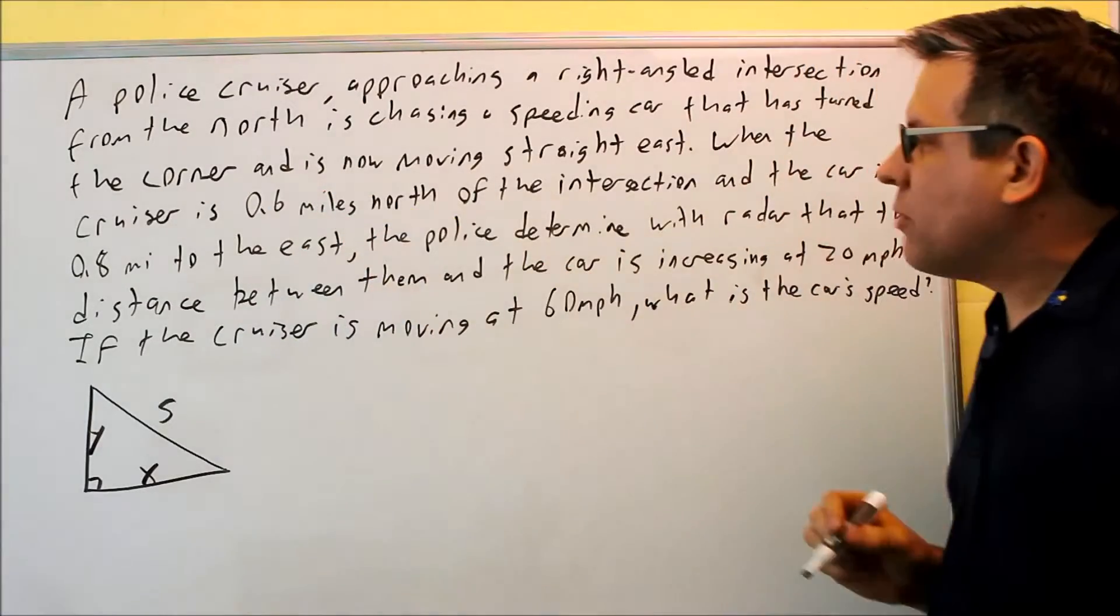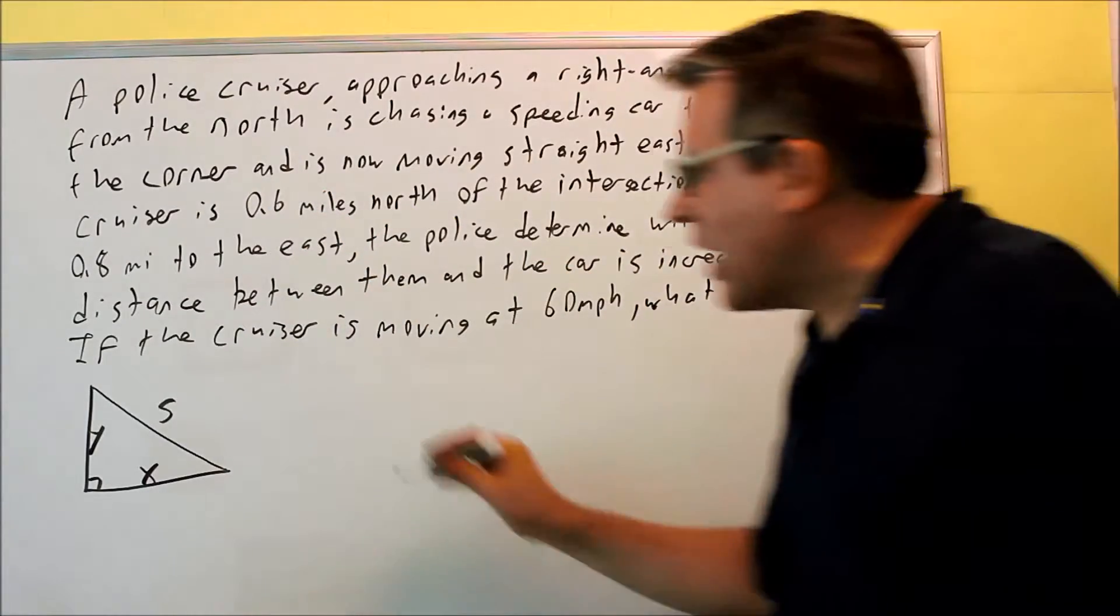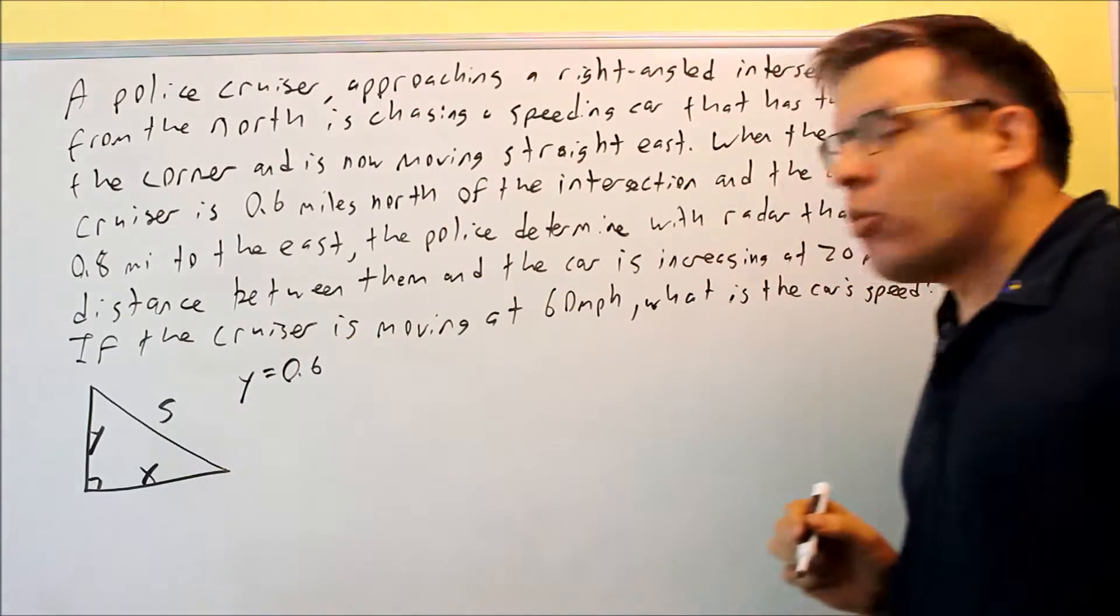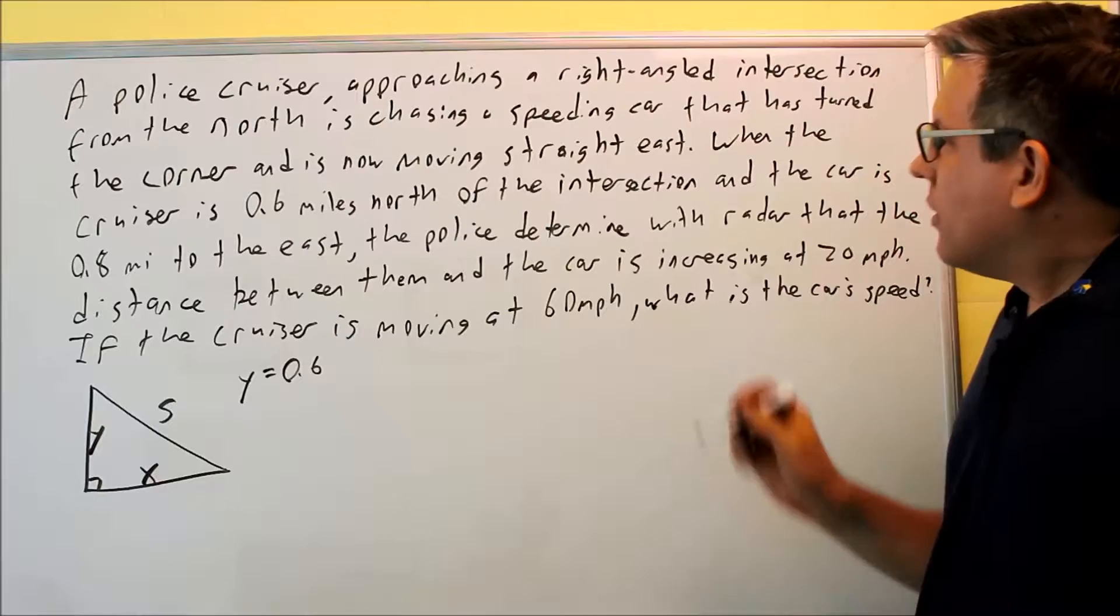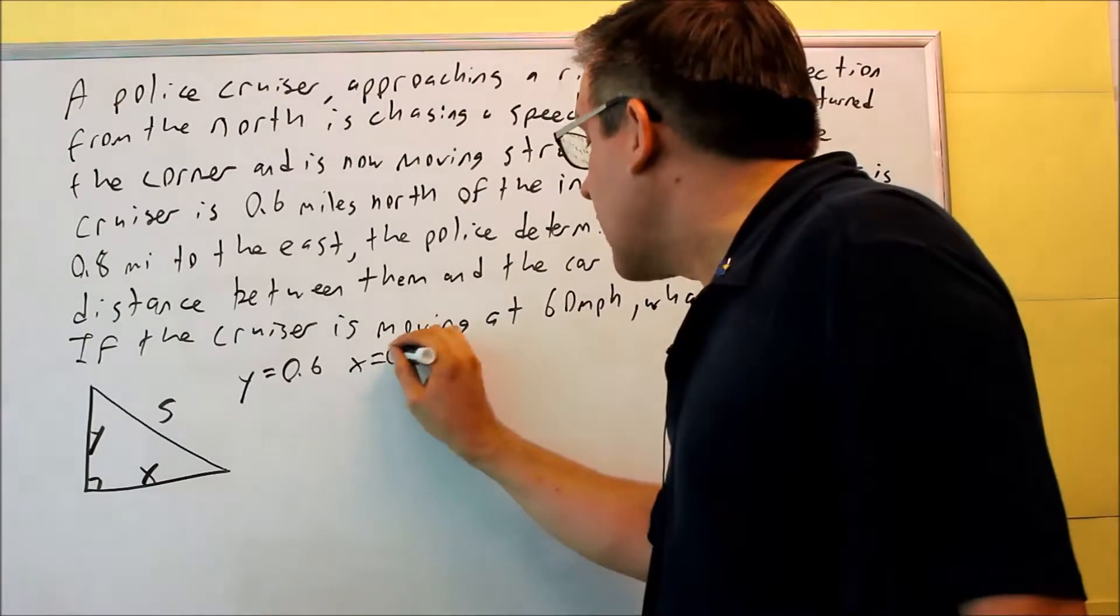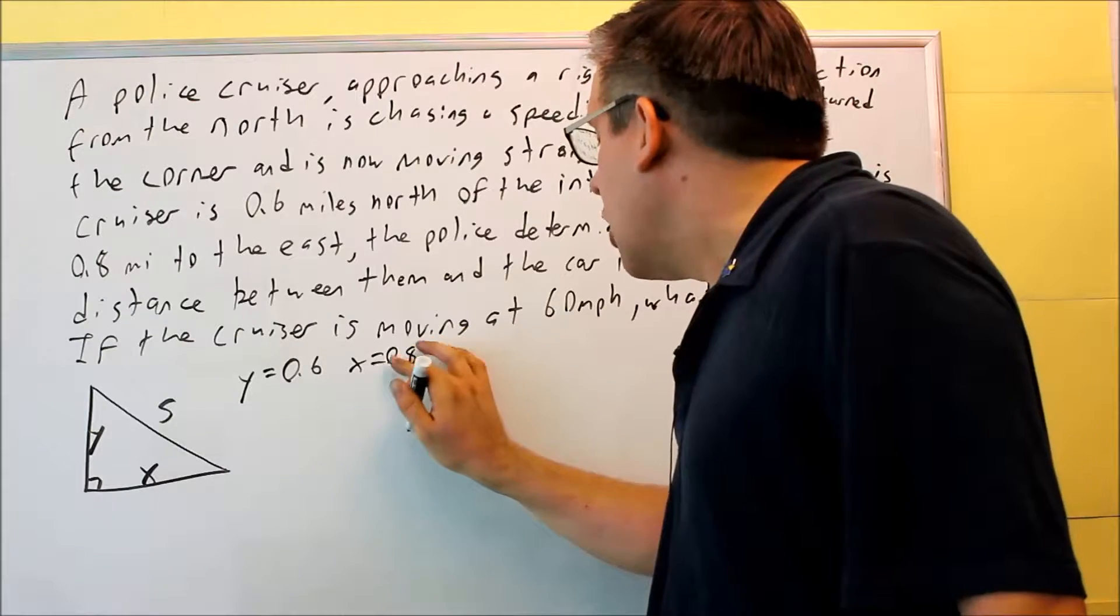When the cruiser is 0.6 miles north of the intersection, that's going to be a Y, so Y is equal to 0.6. The car is 0.8 miles to the east. That's your X. Your X is going to be 0.8.